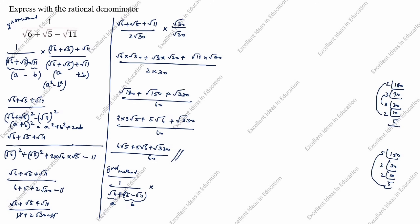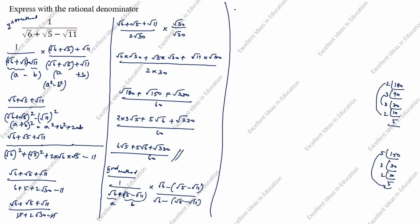We rationalize by multiplying by root 6 minus root 5 minus root 11 divided by root 6 minus root 5 minus root 11. Expanding the numerator: root 6, minus into plus gives minus root 5, minus into minus gives plus root 11. This is A plus B times A minus B, which equals A square minus B square. So A square is root 6 whole square, minus B square is root 5 minus root 11 whole square.